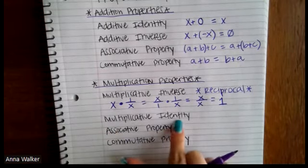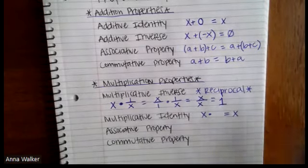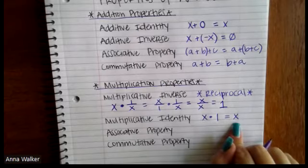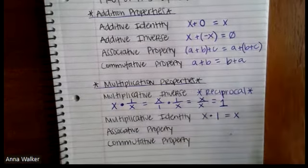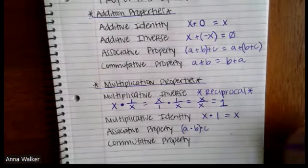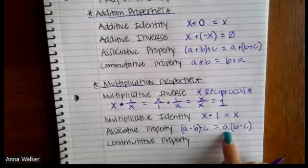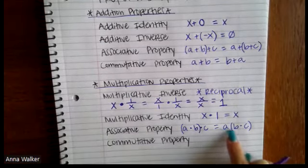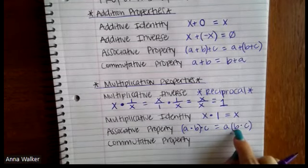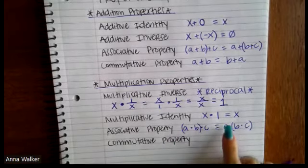Let's look at the last three. The multiplicative identity says that if we have a number X and we do X times one, that does not change the value of the number — anything times one is just itself. Then the associative property of multiplication is similar to what we did for addition. If we have A times B times C, we can multiply A times B first, then multiply by C, or we could do B times C first and then multiply by A. We'll get the same value either way.